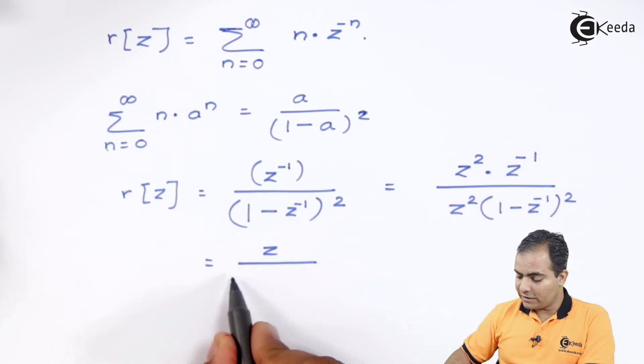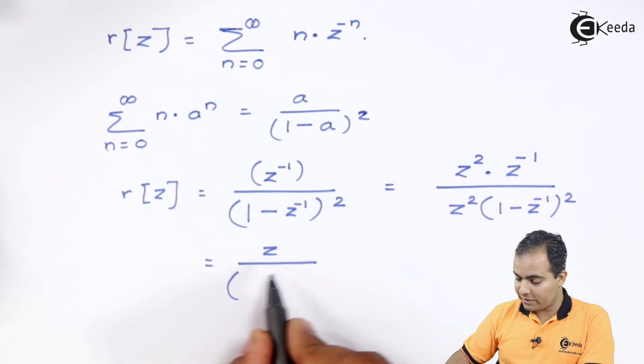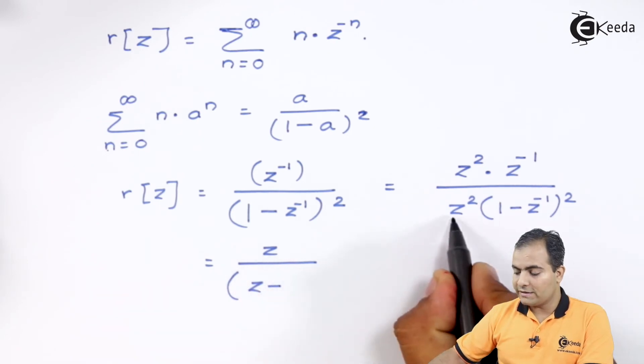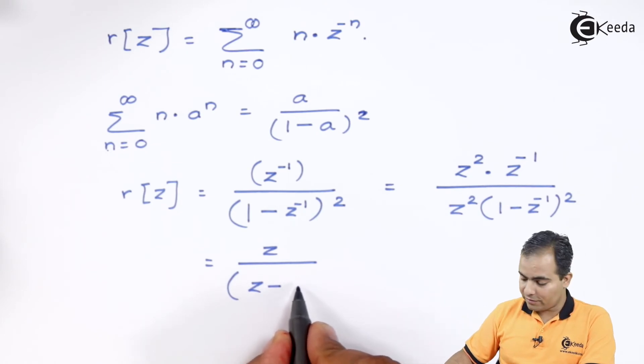Now, inside this bracket, this z, only z will be multiplied inside the bracket. So, z into 1 will be z and z into z minus 1, what we will get? z to the power 0 and it is always 1.